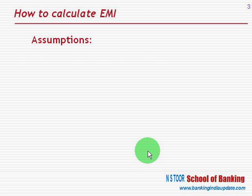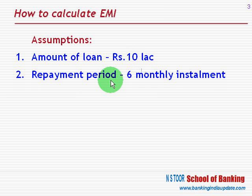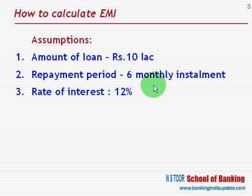Here is our example. The amount of loan is rupees 10 lakh. The repayment period is 6 months in monthly installments. Rate of interest is 12%. We shall calculate EMI by using a mathematical formula and also by using a table method.